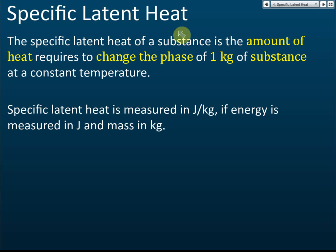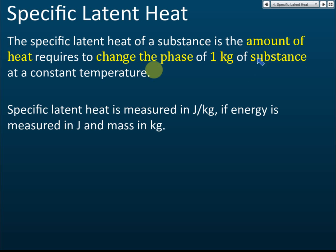So what does it mean by specific latent heat? The specific latent heat of a substance is the amount of heat required to change the phase — that means change the state. Up to this point it's still the same as latent heat. The difference is that specific latent heat refers to the energy needed to change the phase of exactly one kilogram of a substance at a constant temperature. Latent heat doesn't specify the mass — one kg, two kg, three kg, it doesn't matter — but specific latent heat must be for just one kilogram.